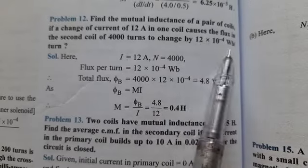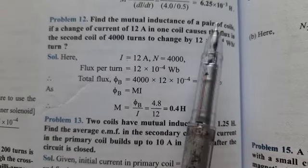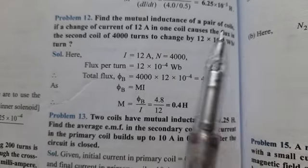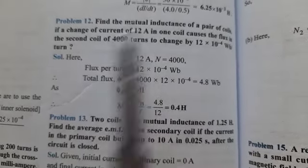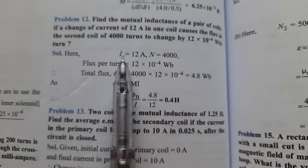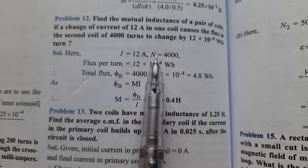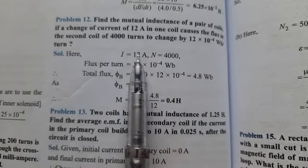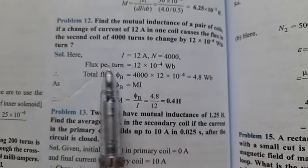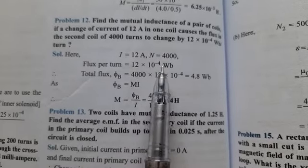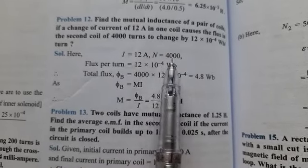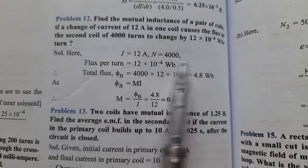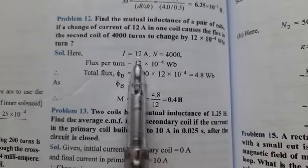Given: mutual inductance of pair of coils, current is 12 ampere in one coil, and the other has 4000 turns. The flux unit is weber. We need to find the mutual inductance.